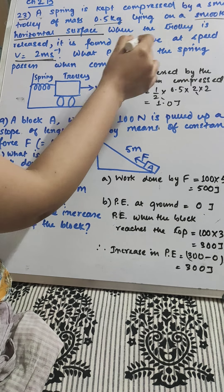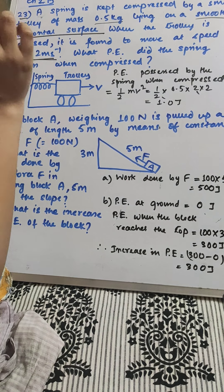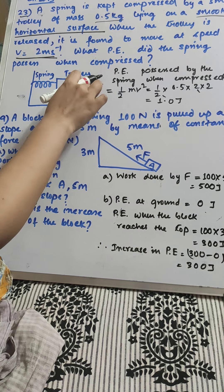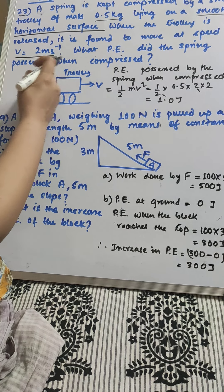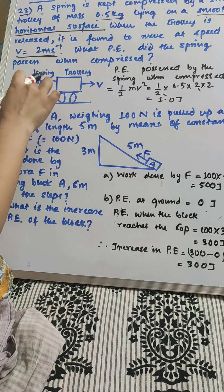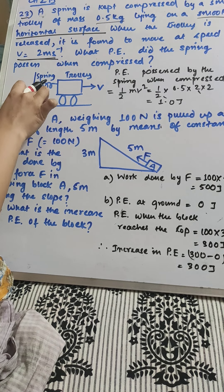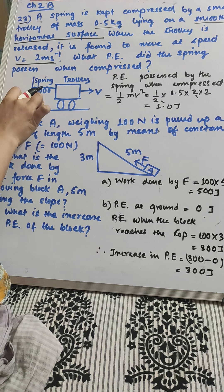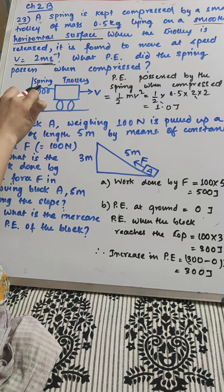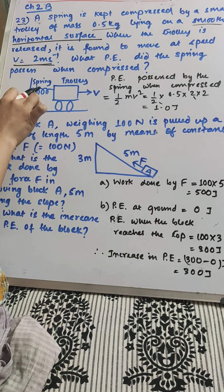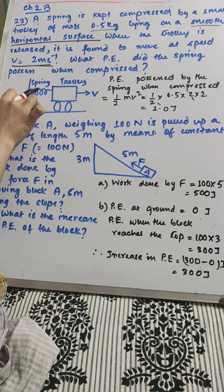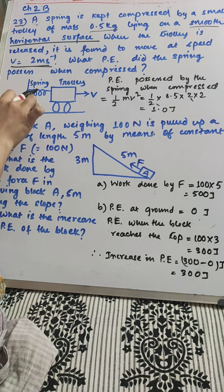What potential energy did the spring possess when compressed? When the spring was compressed by the trolley, it was possessing elastic potential energy, the potential energy which a body possess due to the configuration.